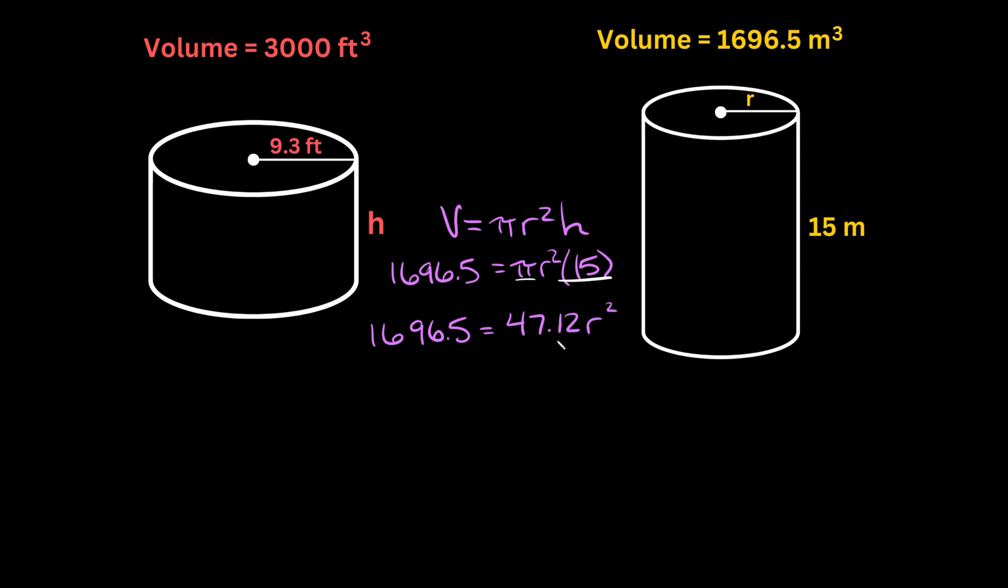Now in order to isolate r, we can get rid of this number, this 47.12 by dividing both sides by 47.12. So on this side, those cancel out, and we're left with r squared is equal to this thing right here, which is about 36.